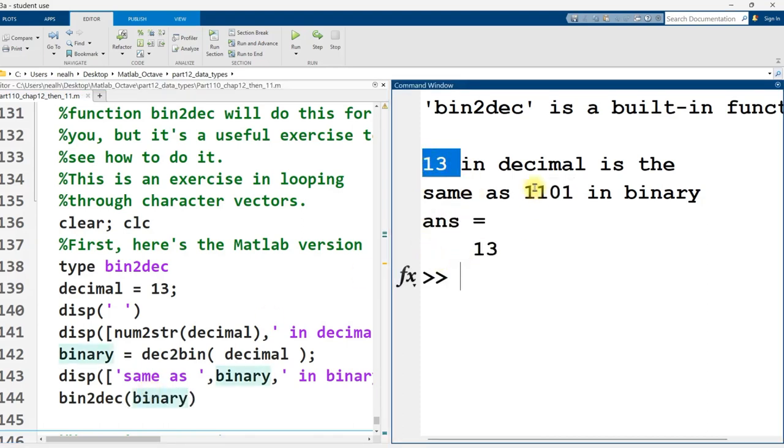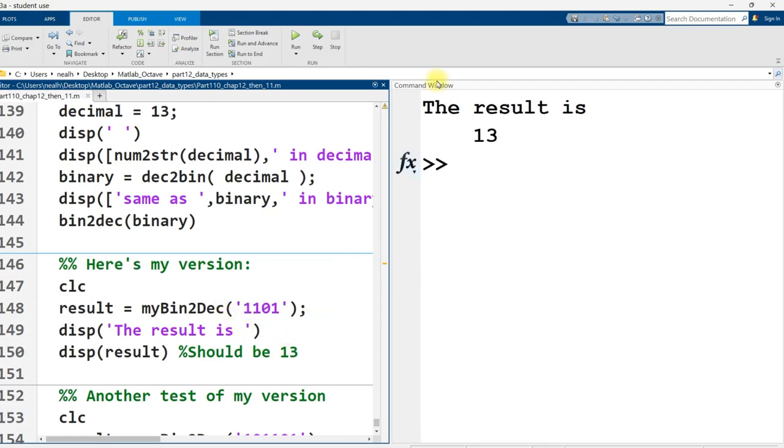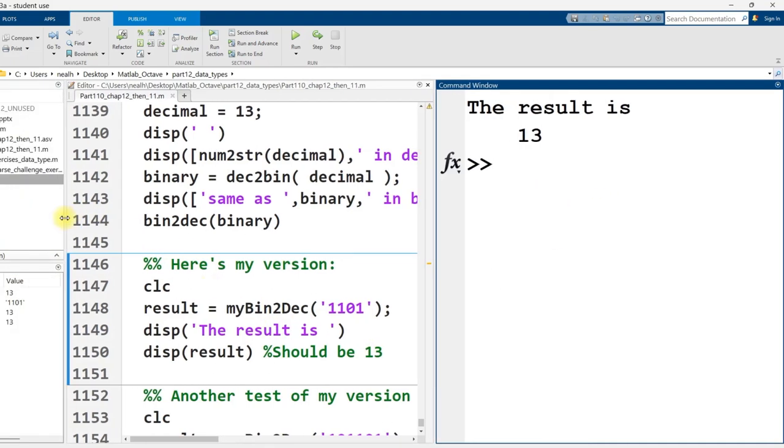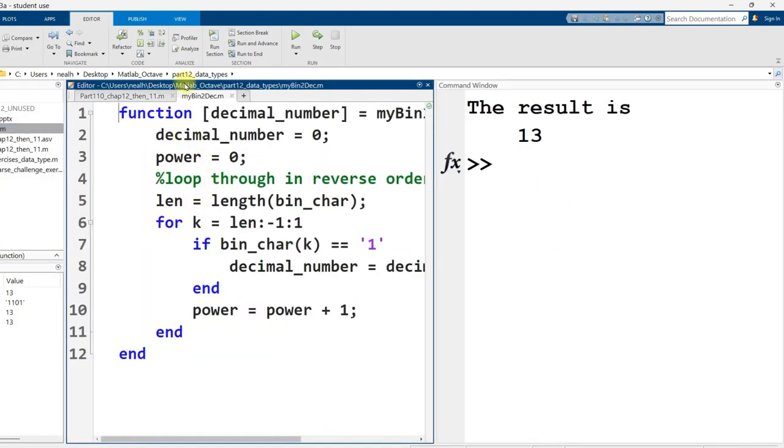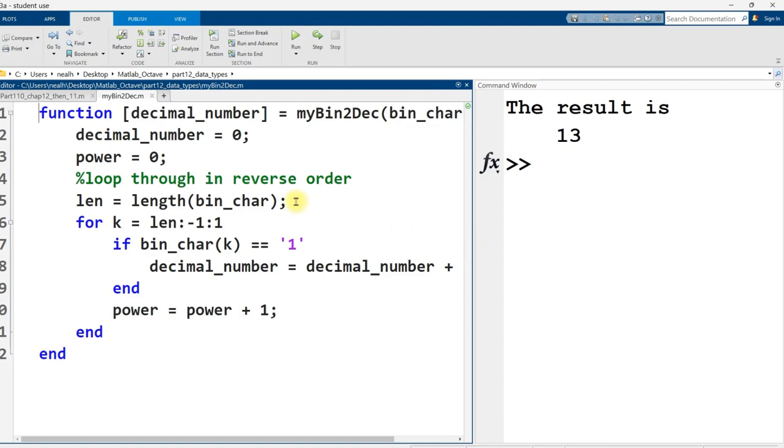So I started with 13, translate it to binary, there's the binary, translate it on back, there's the 13. But let's actually see my code. Okay, so here's my code, mybin2dec, takes 1101 as a string, as a character vector is what I should say, and it should give me 13. And there it does. But the real interesting part here is the code. Let's check out the code. And there will be a link to this code in the video description as well. And this part does work in Octave, in case that wasn't clear.